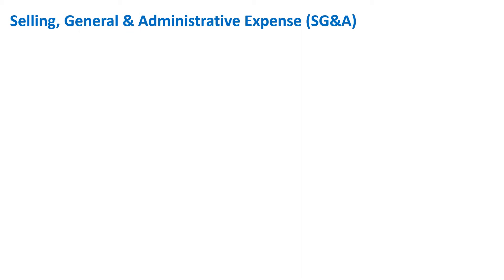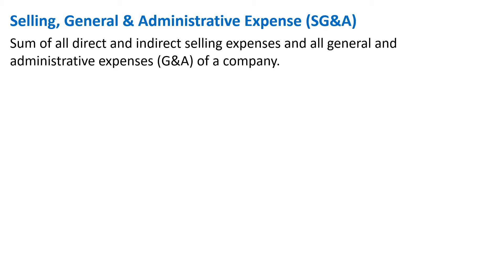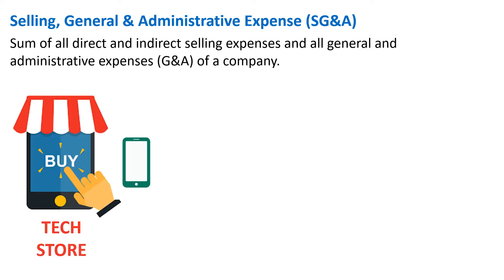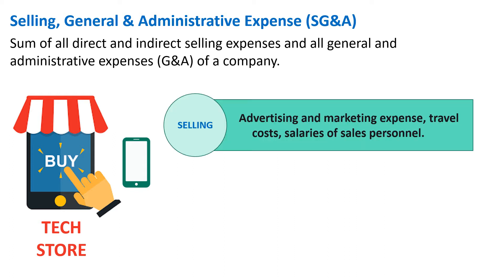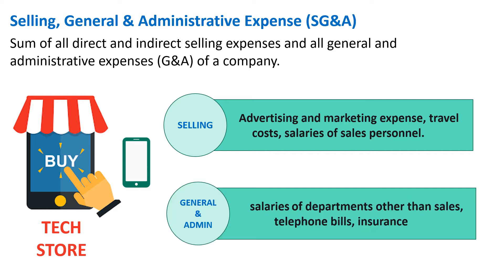SG&A stands for Selling, General, and Administrative expense. It's a sum of all direct and indirect selling expenses and all general and administrative expenses of a company. To explain this better, let's think about a cell phone store called Tech Store. Tech Store is trying to sell cell phones, and it would primarily have two kinds of expenses. The first is selling expense, which includes advertising and marketing expense and travel costs of the sales team or salary of the salesperson.